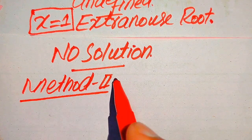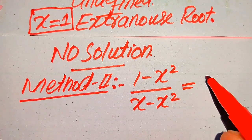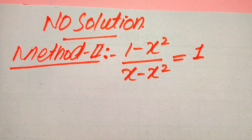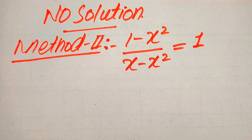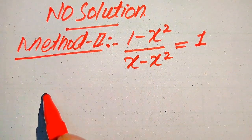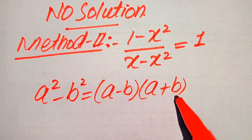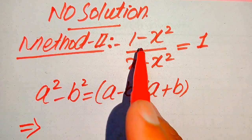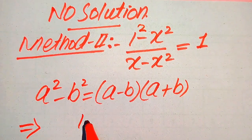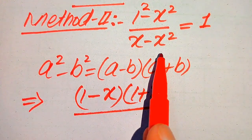Now we solve this problem using the second method. The given equation is (1 minus x squared) divided by (x minus x squared) equals 1. In this method I will give you a smart technique to easily find the value of x. We use the algebraic formula: a squared minus b squared equals (a minus b)(a plus b). Applying this to the numerator, writing 1 as 1 squared, the numerator becomes (1 minus x)(1 plus x), divided by (x minus x squared).